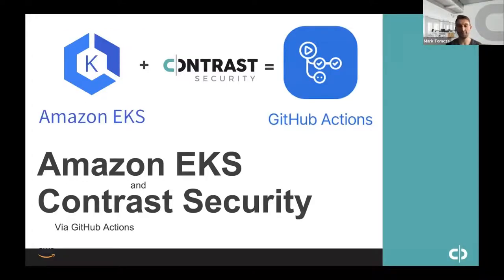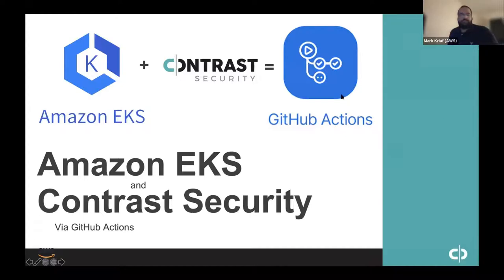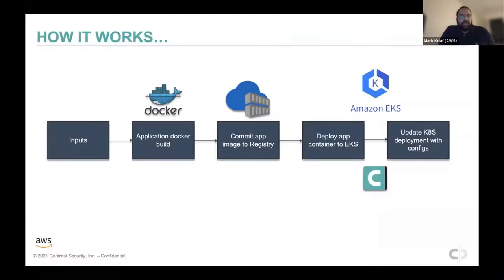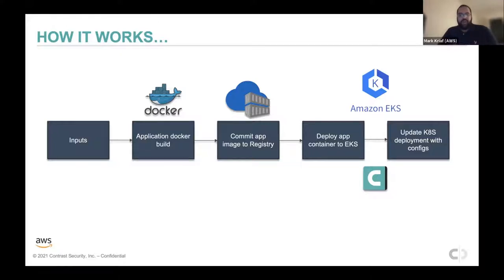All right, so now I'm going to hand it off to Mark. So thank you very much. Let me start by sharing my screen and we'll go over what we're going to talk about in our demo. So what we want to achieve here: we're going to show how we take several inputs we give to our application — things like environment variables — we build a Docker application, in our case a web application, we commit it into an ECR repo, we deploy it into an EKS cluster, and then we show how Contrast Security comes in and gives us an in-depth view of what exactly is going on and how secure our application is.